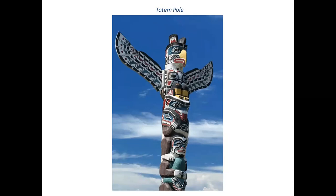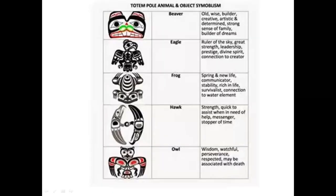Let's have a look at one or two. One which repeats itself a lot is the beaver — an old, wise builder, creative, artistic and determined, with a strong sense of family, builder of dreams. And the eagle — ruler of the sky, great strength, leadership, prestige, divine spirit, connection to the creator. The frog — spring, new life, communicator, stability, rich in life, survivalist, connection to the water element. Each animal has its own characteristic and life-giving force. This totem pole was at the center of their village — the center of their life — so no matter where they went, they could always refer to it, and it told their historical story as well.